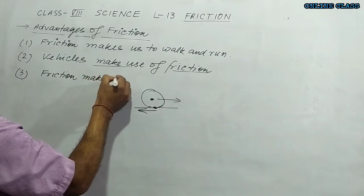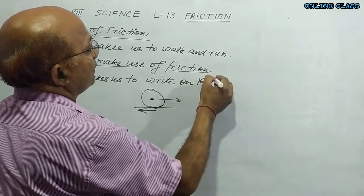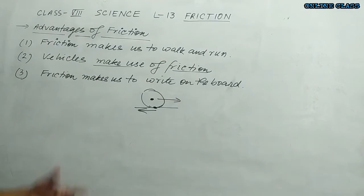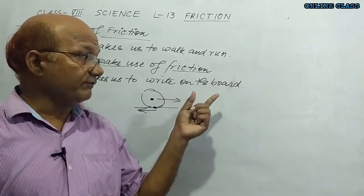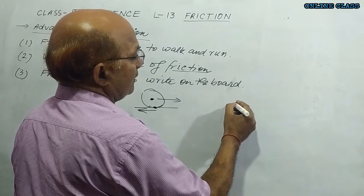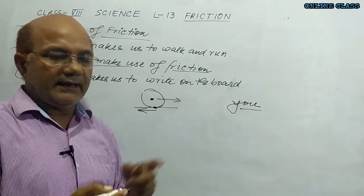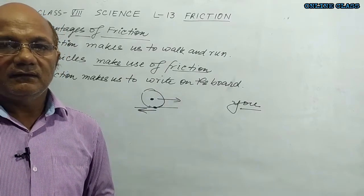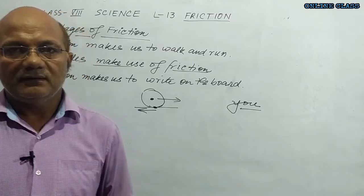Friction also helps us to write. As you can see, I am writing on the board with this marker, and this is only because of friction I am able to write. It is only because of friction between the surface of the board and the tip of the marker that we can write on the board — or write something on your copy or any page.